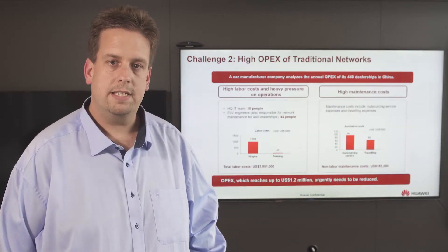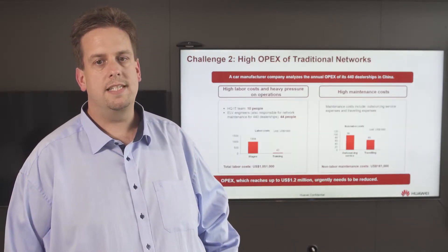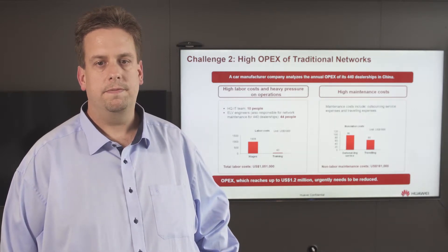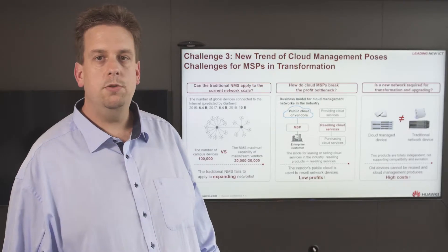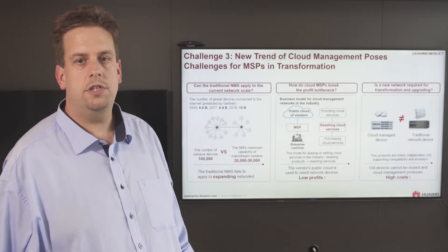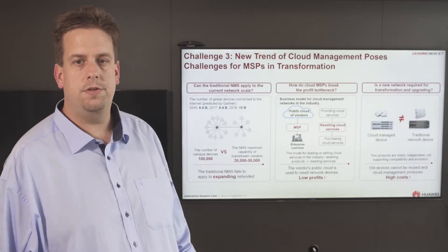Now let's look at OPEX. Operating a network has a similar issue — it is always combined with high manpower and traveling costs. In the example shown here, a car manufacturer analyzed his cost structure. With a team of only 10 people responsible for access networks at headquarters and about 440 dealership sites, total costs reached 1.2 million dollars a year. The new trend of cloud management also leads to challenges for MSPs and customers in transforming to a new business model.